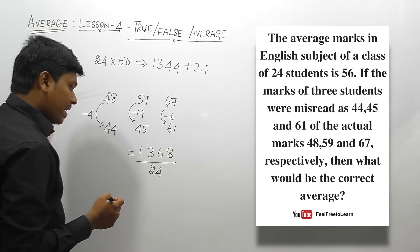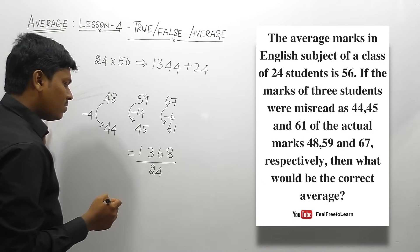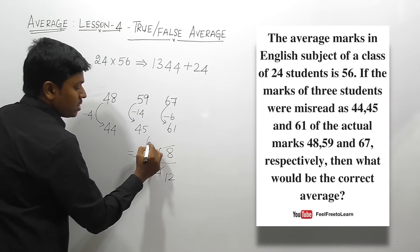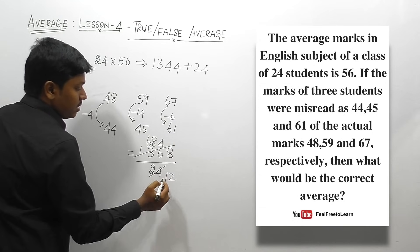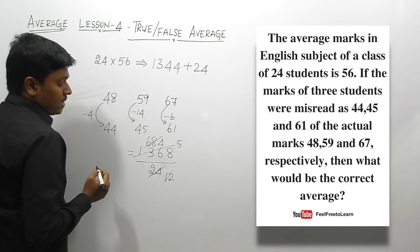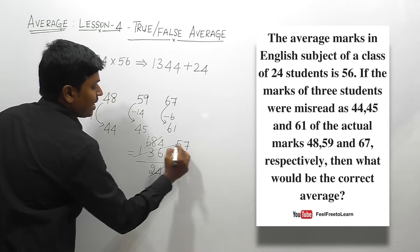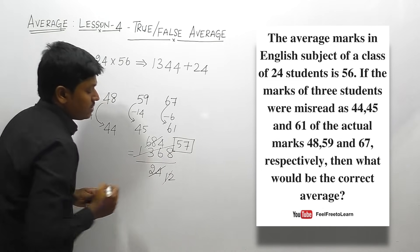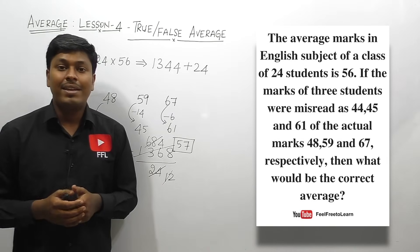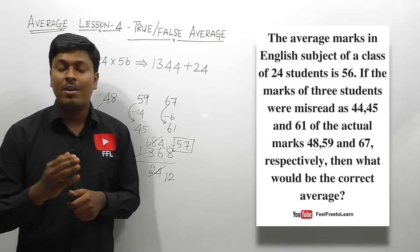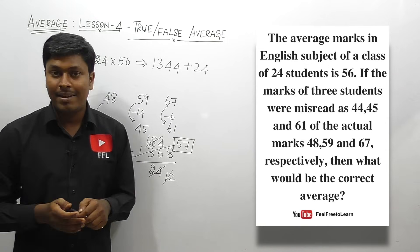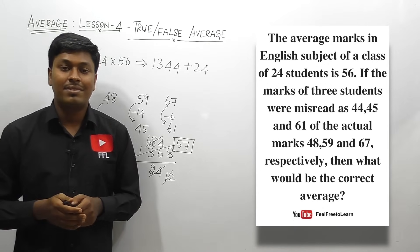1368 ÷ 24: cancelling on the 2 table and simplifying gives 57. The correct average for question five is 57. Finally, all five questions on lesson number four — based on true and false averages — have been solved. Don't forget to watch the remaining lessons and share this video with your friends.